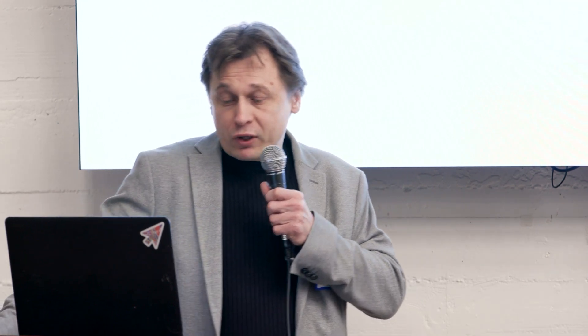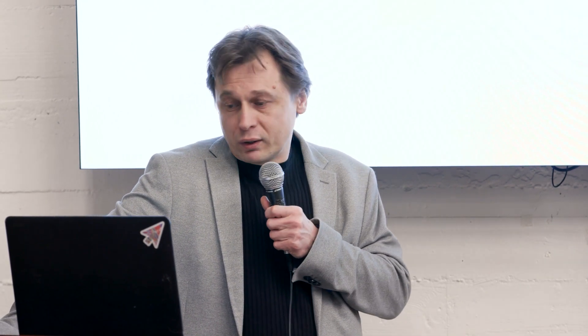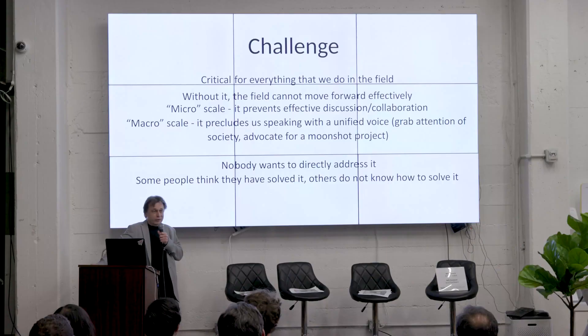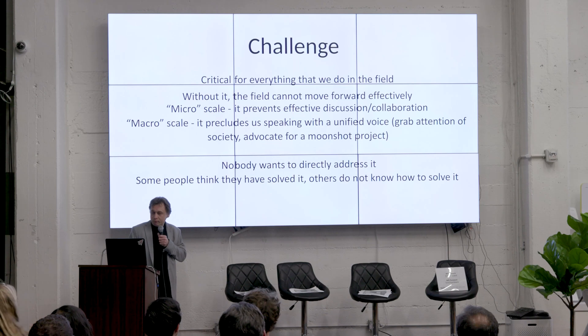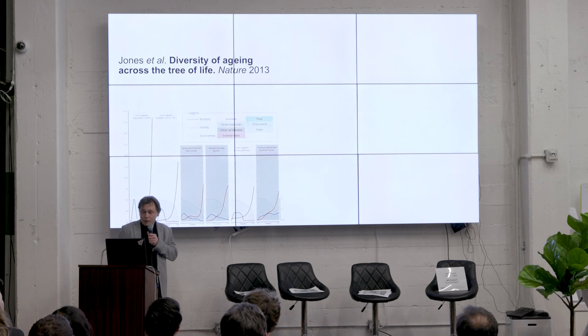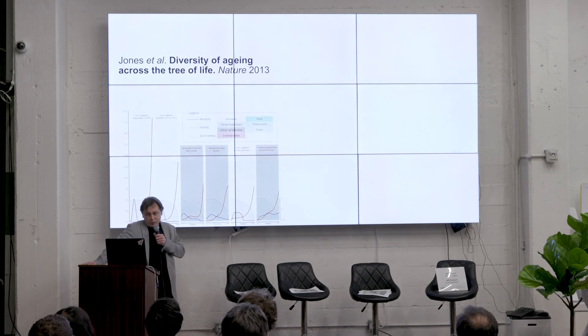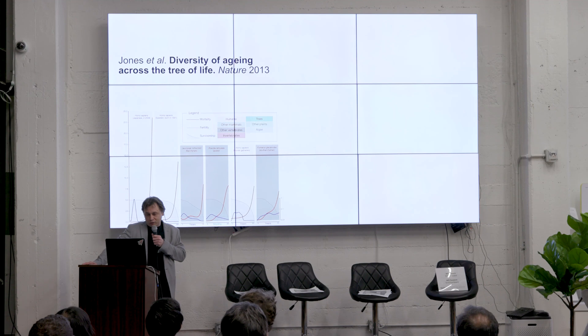It's a kind of unspoken challenge. Some people think that they have solved it already — they know the answer — and some people don't know how to address it at all. Nine years ago, a paper was published called 'Diversity of Aging Across the Tree of Life.'